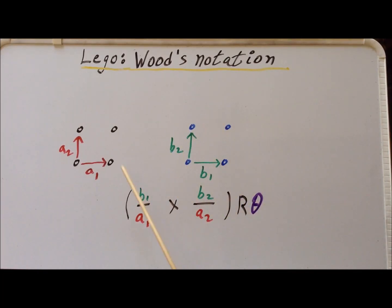If the adsorbate lattice is rotated relative to the crystal structure lattice, some angle other than zero, then we add R, the angle theta, where theta is in degrees after this expression here. Finally, if this particular adsorbate structure is a primitive unit cell, we put the letter P in front, P being for primitive. If it turns out it is a centered cell, then we put the letter C in front.